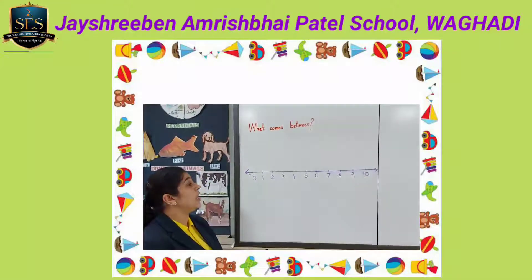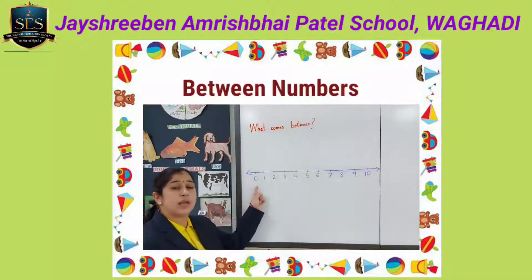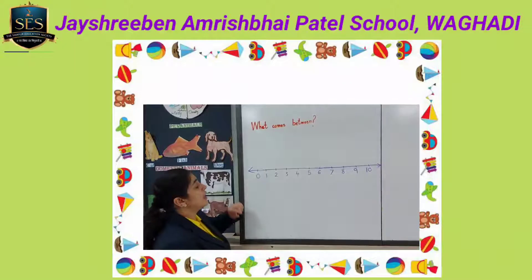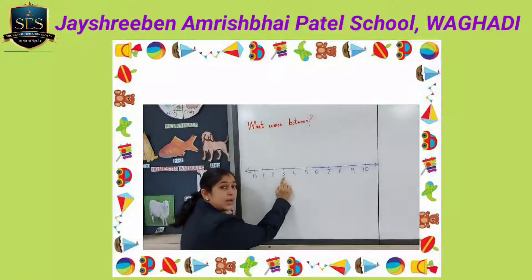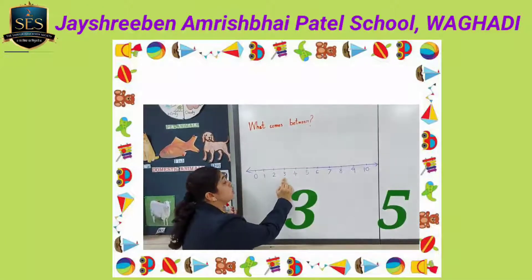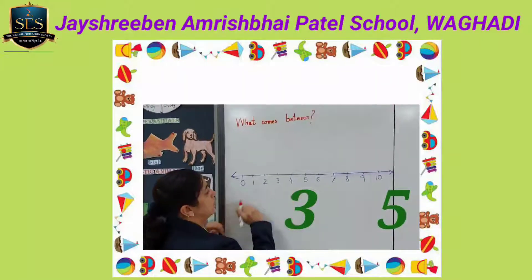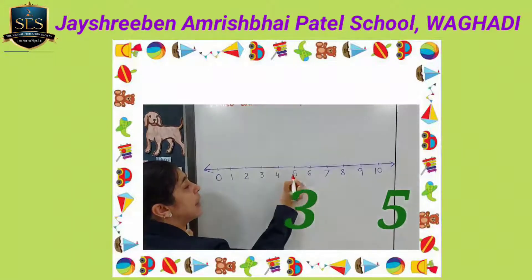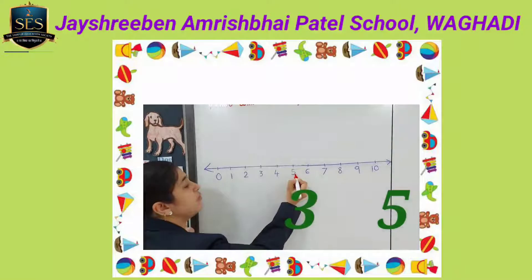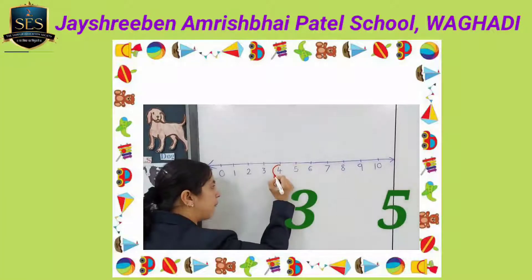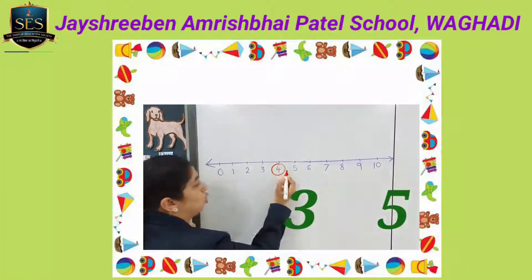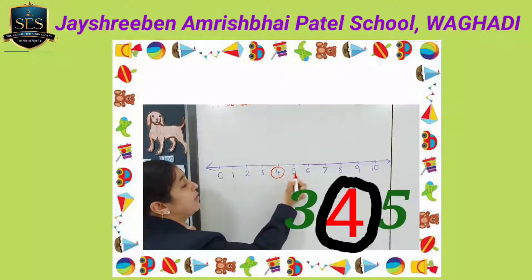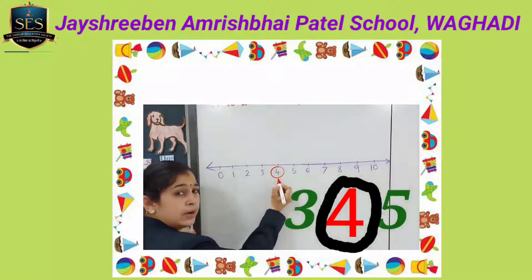Now we will see between numbers with the help of the number line. See children, can you tell me which number is this? This is number 3. And this is number 5. So which number will come between 3 and 5? This number will come — this is number 4. Toh 3 aur 5 ke beech mein kaunsa number aega? 4 aega. So the between number of 3 and 5 is 4.